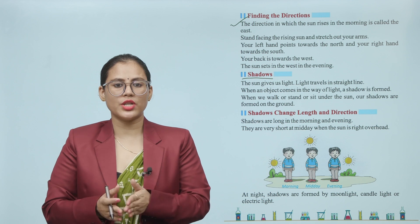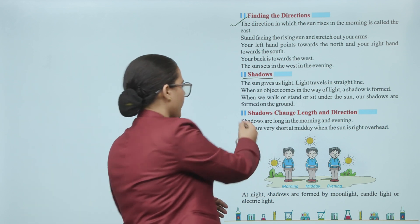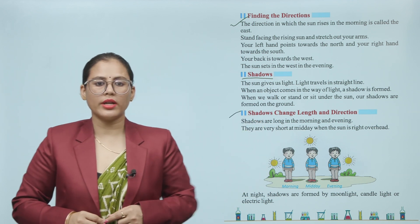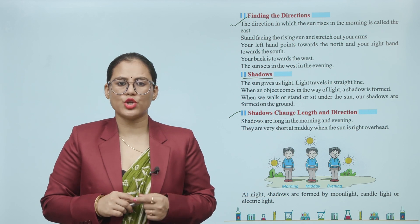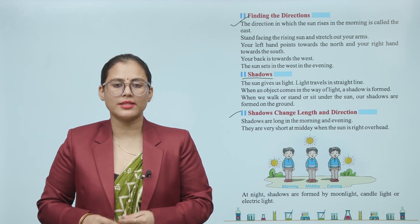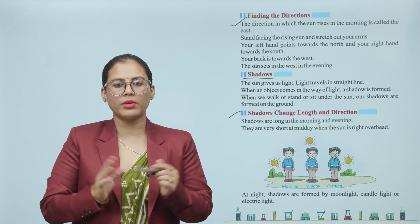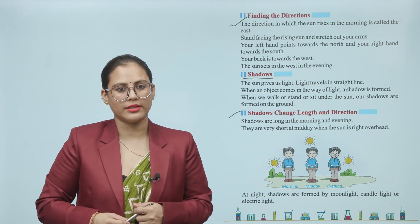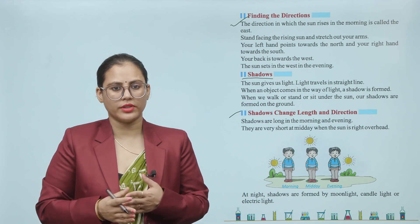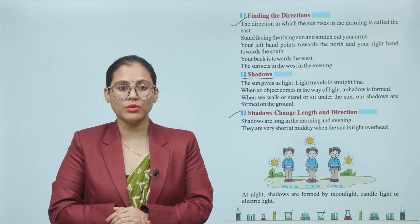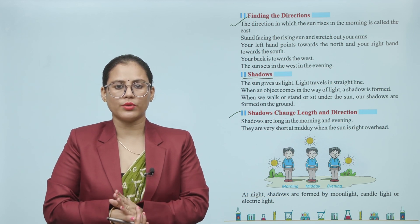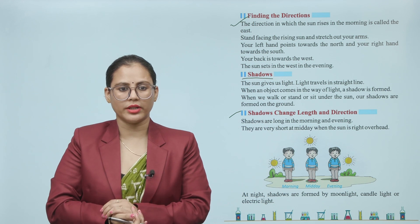Shadows: The Sun gives us light. Light makes our shadow in a straight line. When we walk or stand or sit, our shadow is formed. Shadows are long in the morning and evening and very short at midday when the Sun is right overhead.